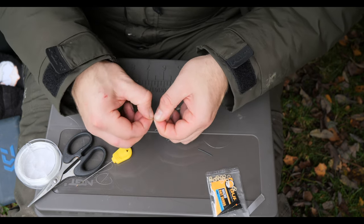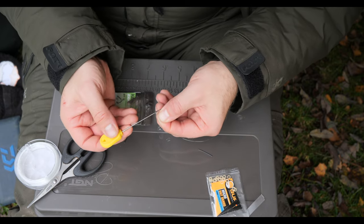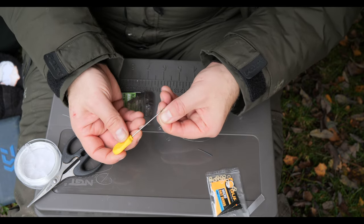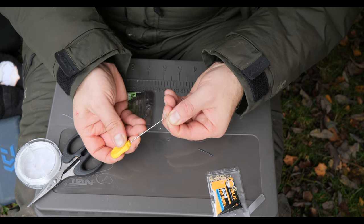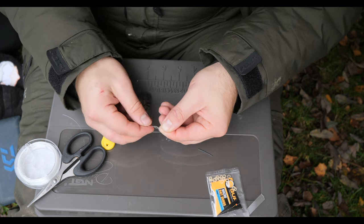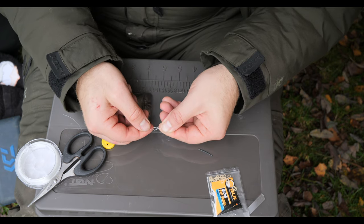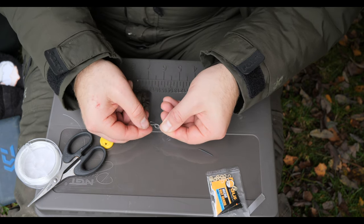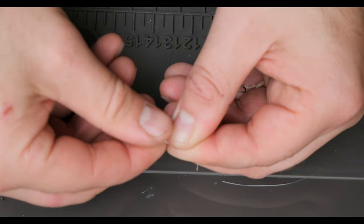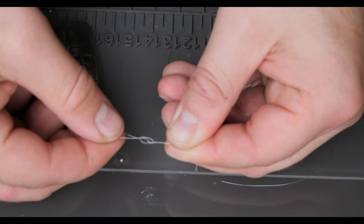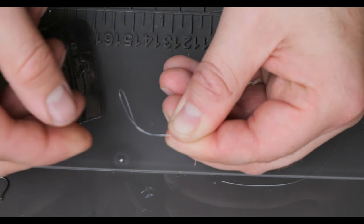So again, round the line, use your baiting needle as a tool and just bring that back through. And like I say, when you've tied it right, it'll form an eight shape. So let's zoom in on that, wet the knot, there's your eight shape and just pull that down.